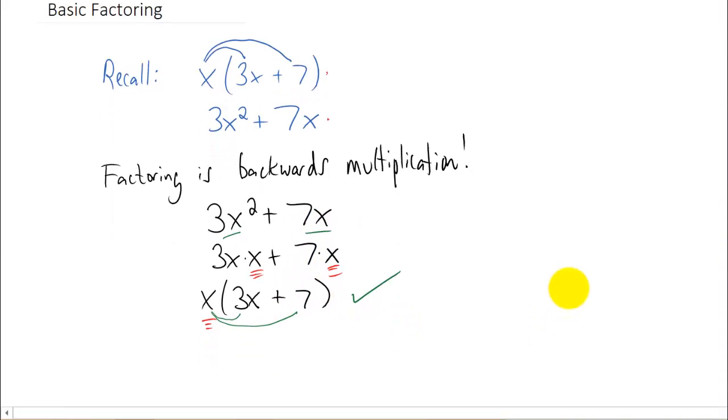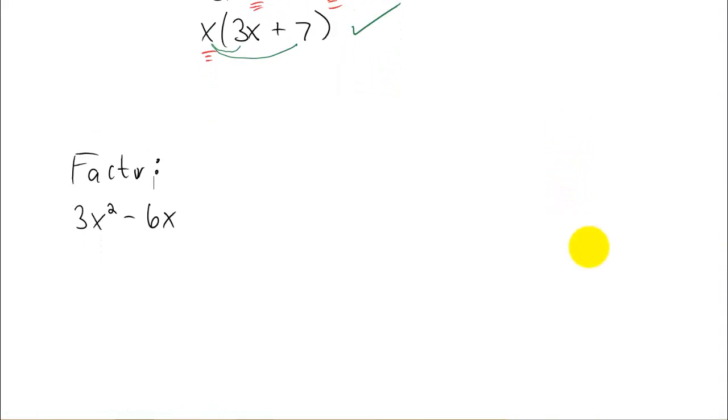Alright, I know this might be a little confusing at first. Let's take a look at another example. I would like to factor 3x squared minus 6x. And the first thing you might notice, of course, is that there's a factor of x in each one of these two terms. In other words, we could write this as 3x times x minus 6 times x.